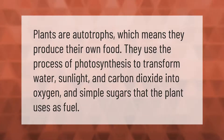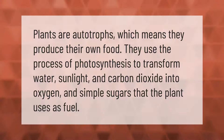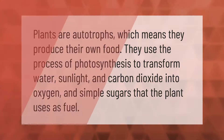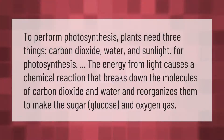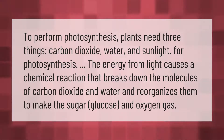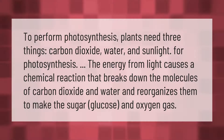Plants are autotrophs, which means they produce their own food. They use the process of photosynthesis to transform water, sunlight, and carbon dioxide into oxygen and simple sugars that the plant uses as fuel. To perform photosynthesis, plants need three things: carbon dioxide, water, and sunlight. The energy from light causes a chemical reaction that breaks down the molecules of carbon dioxide and water and reorganizes them to make the sugar glucose and oxygen gas.